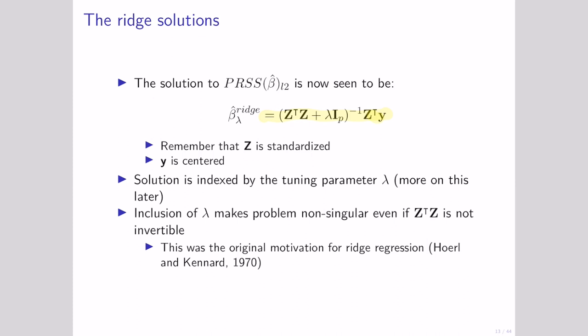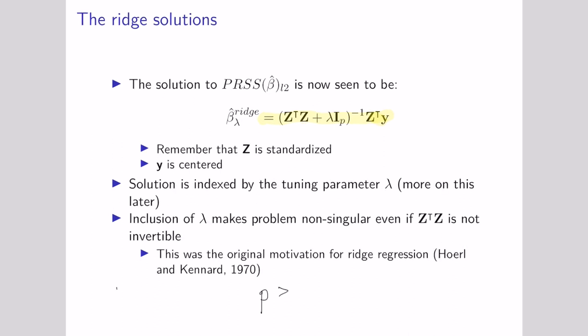One really nice property is that including this lambda penalty term actually makes it possible to calculate solutions when we otherwise wouldn't be able to. We talked about one limitation of ordinary least squares: if p is greater than n, we can't calculate a solution because there's an infinite set of different models that would all perfectly fit our data. With ridge, we actually can calculate a solution because we'll always be able to invert the matrix we compute.